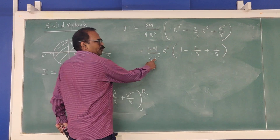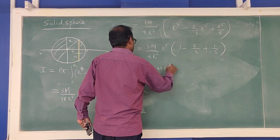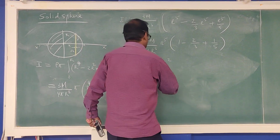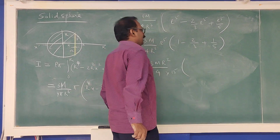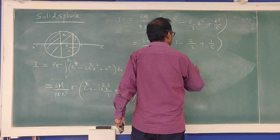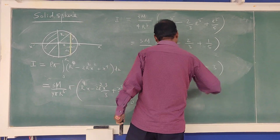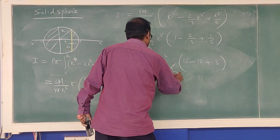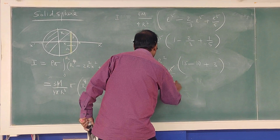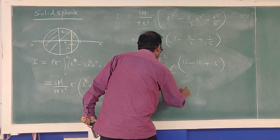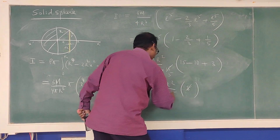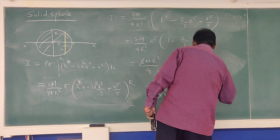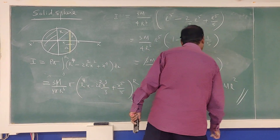Computing: R⁵(1 − 2/3 + 1/5) = R⁵ · (15/15 − 10/15 + 3/15) = R⁵ · 8/15. So I = (3M/4R³) · π · R⁵ · (8/15). After cancellation, I = (3M · 8 · R²) / (4 · 15) = 2/5 · MR². The moment of inertia of a solid sphere about any diameter is 2/5 MR².